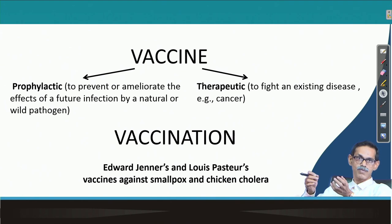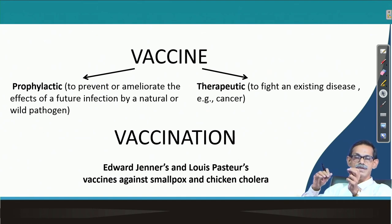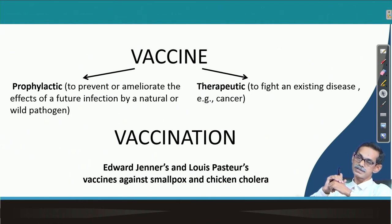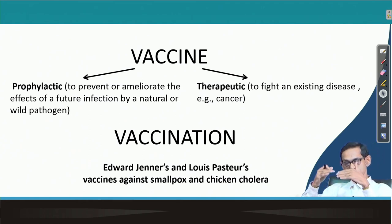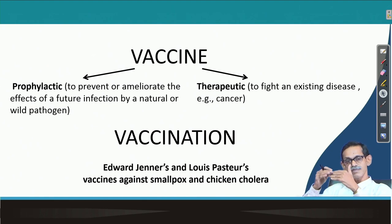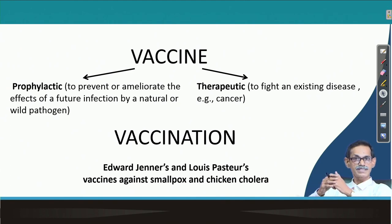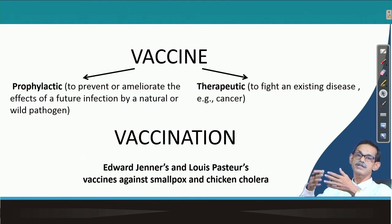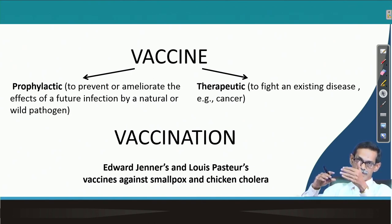Vaccine can be of two types: one is called prophylactic and another is therapeutic. Prophylactic means to prevent or ameliorate the effects of a future infection by a natural pathogen. We are priming the individual with the vaccine so that our immune system can see it, remember it — the memory B cells and T cells will stay inside the body. So the next time if infection happens, the secondary response will act faster than the primary infection. That is the purpose of vaccination — this is prophylactic.